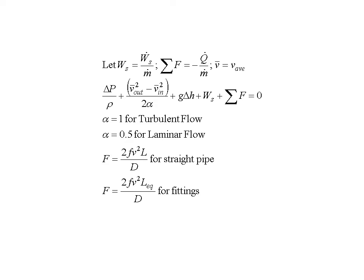Now, for a straight pipe, F is given by the formula 2 times the fanning friction factor times the velocity squared times L divided by D, where L is the length of the pipe and D is the diameter. And for various fittings, we will have the same formula for F, except now we'll use an equivalent length term for that frictional factor.